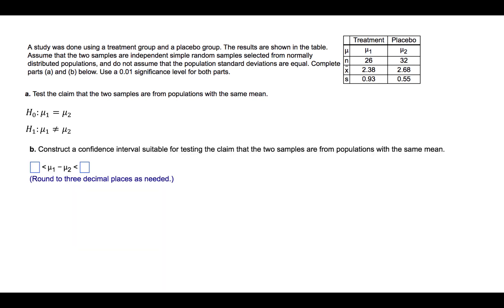In Part B, we are asked to construct a confidence interval suitable for testing the claim that the two samples are from populations with the same mean. We are to construct a confidence interval with the form left endpoint less than mu1 minus mu2 less than the right endpoint.